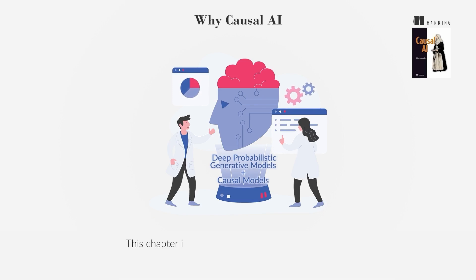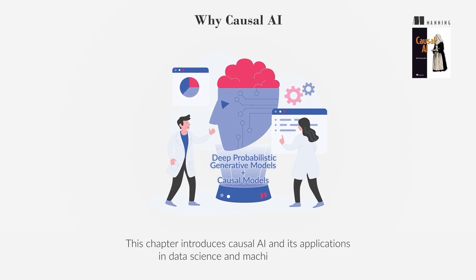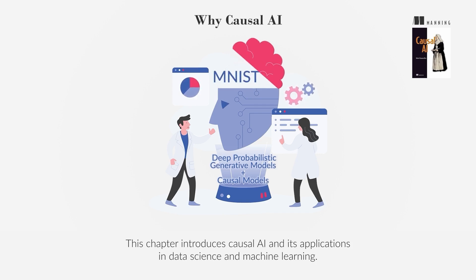This chapter introduces causal AI and its applications in data science and machine learning, using the MNIST computer vision dataset as a case study.